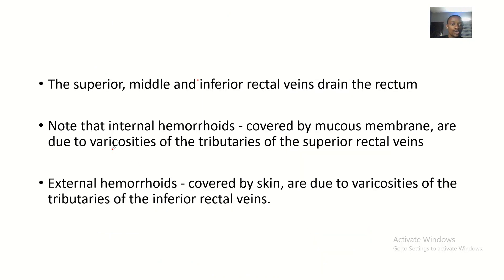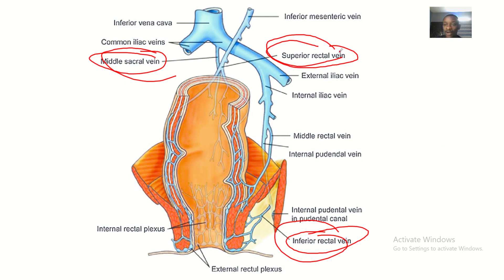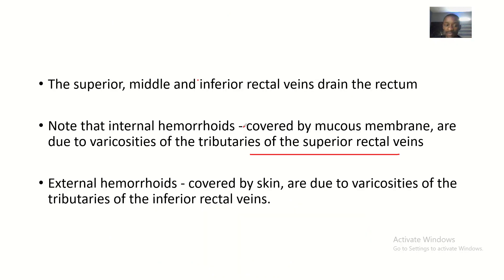Internal hemorrhoids are like inflammation of veins — varicosities. The external surface of the anus may not show them visually, but you can feel the pain. Internal hemorrhoids are due to varicosities of the tributaries of the superior rectal vein. Because the branches are located higher up internally, if inflamed you won't see them on the exterior surface, but you'll feel the pain.